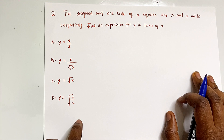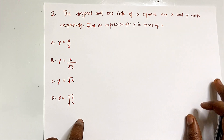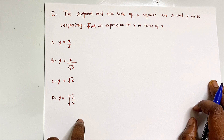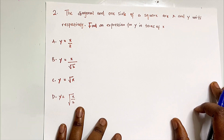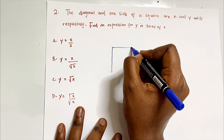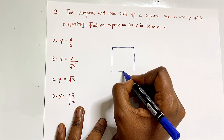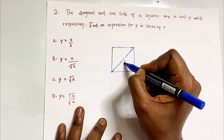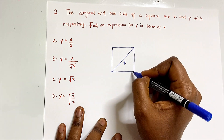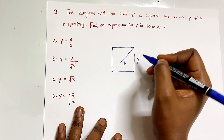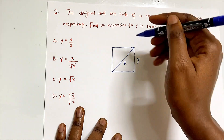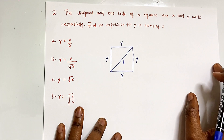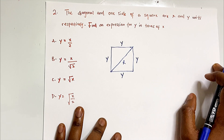Question two says: the diagonal and one side of a square are x and y units respectively — find an expression for y in terms of x. Drawing the square quickly: the diagonal is x and one side is y. Since a square has equal sides, all four sides are y.